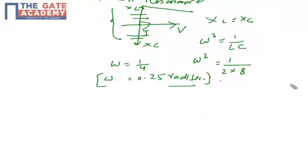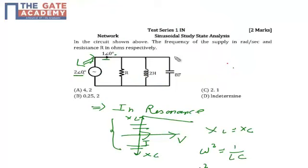In the case of resonance, XL equals XC, so the effective impedance is just R. The effective impedance equals R only because XL and XC are cancelled out. They are equal to each other and will cancel each other out. So if the effective impedance is R...